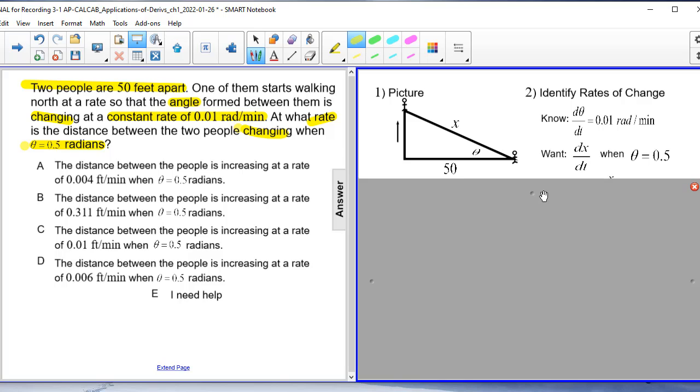Okay, so let's start by drawing a picture. We know here that we have the two people and the one person starts here and begins walking north this way. And as he's walking or he or she's walking, this theta right here is changing and the distance between them is also changing. My pen has a delay to it. So that's what we know.